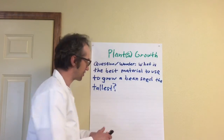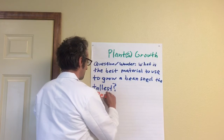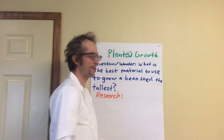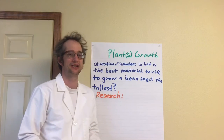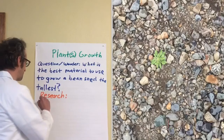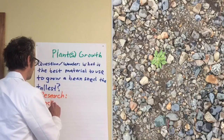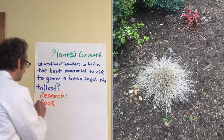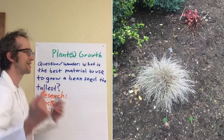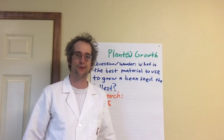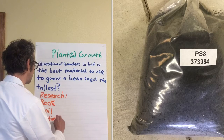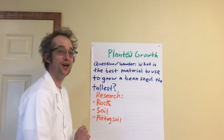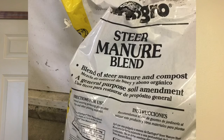My next thing is going to be research. There were a few different materials I've thought about. One being rocks — I wonder if stuff could grow in rocks. I'm always outside in my yard, I have a gravel driveway, and there's always weeds growing in rocks, so rocks could be a high possibility. There's also soil — just plain soil you could go dig up at the park. There's also potting soil, which you can buy at the store like Home Depot. And there's also compost or manure.